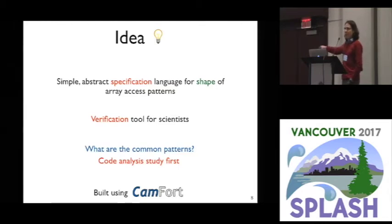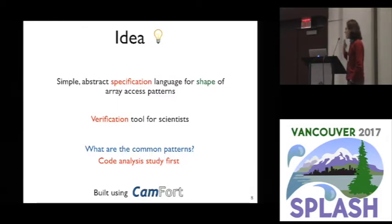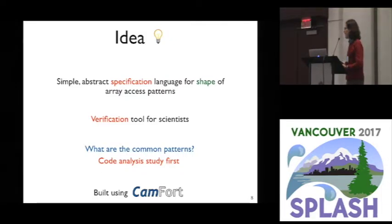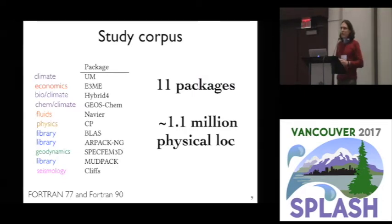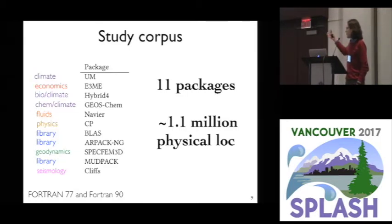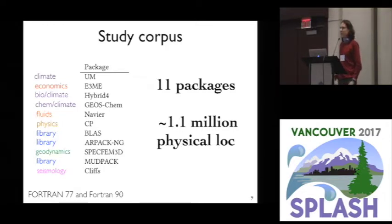We built everything on top of CAMFOR — that's our infrastructure for analysis and verification of Fortran code. But before we did this, we really needed to collect some data about how scientists actually use arrays, and we couldn't find any serious data out there other than anecdotes and feelings. So we put together a corpus of 11 real-world scientific software packages — big climate models, things from physics, as well as a few commonly used numerical libraries — roughly 1.1 million physical lines of code, excluding comments and whitespace.